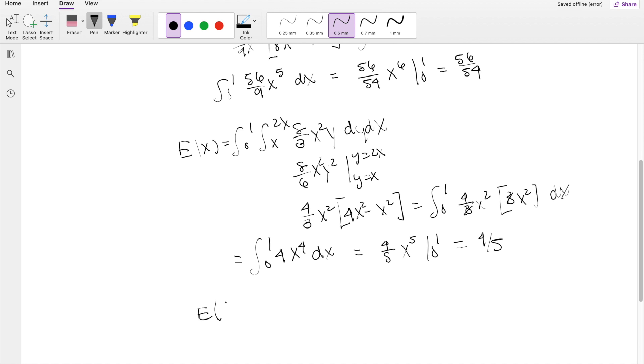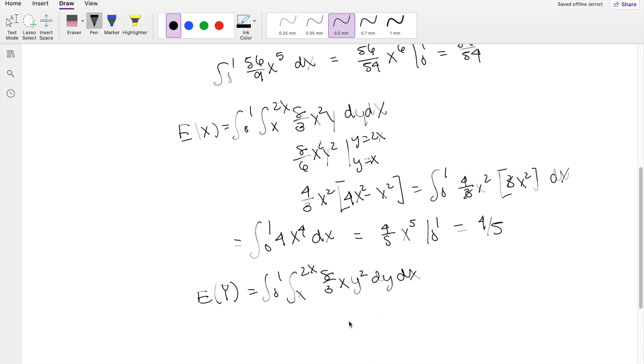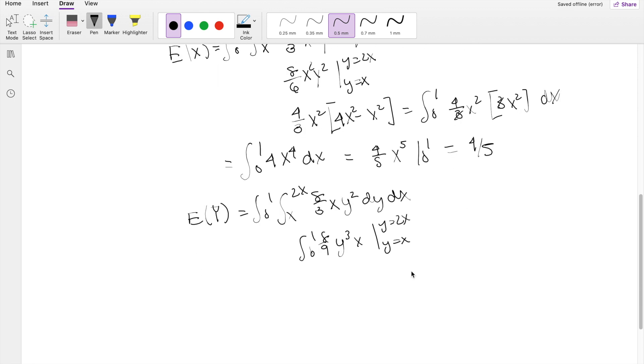Finally, the expected value of y. Likewise, the range is still the same. You're still integrating from the same values, x to 2x. But instead of an extra x or an extra xy like before, you have an extra y this time, dy dx. Integrating with respect to y first, you get y cubed over 3, so 8 over 9 x, integrating y from x to 2x, 0 to 1. This is equal to 8 over 9 x. Putting in the upper limit here, it's going to be 8x cubed minus the lower limit, x cubed.